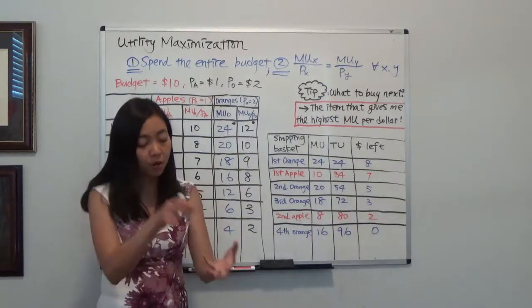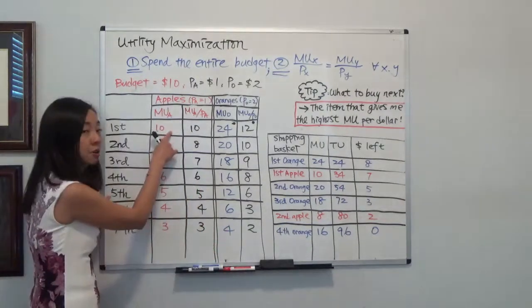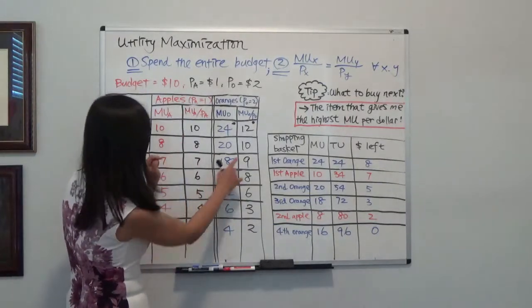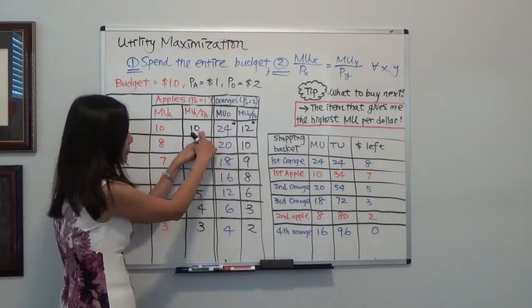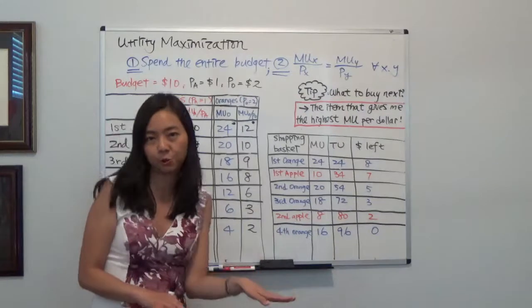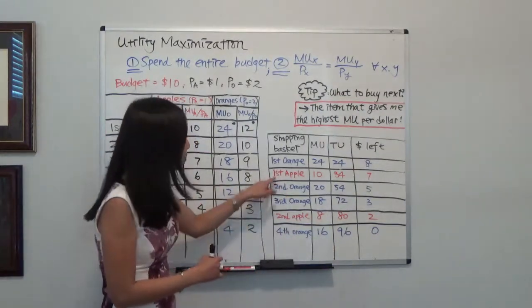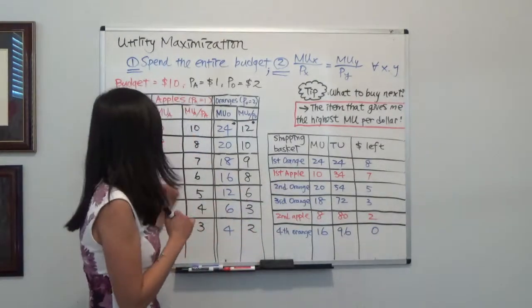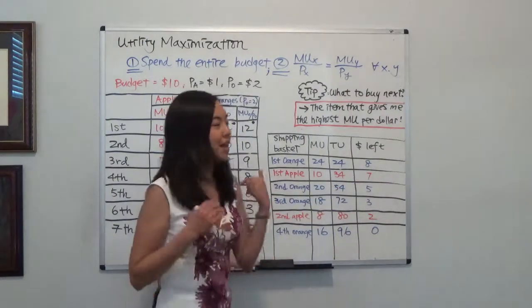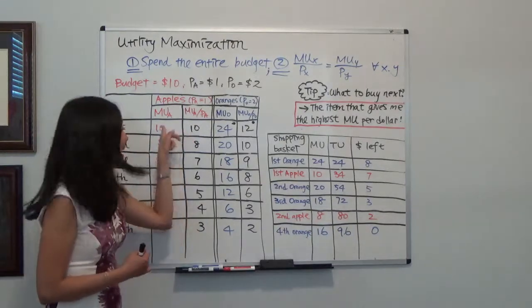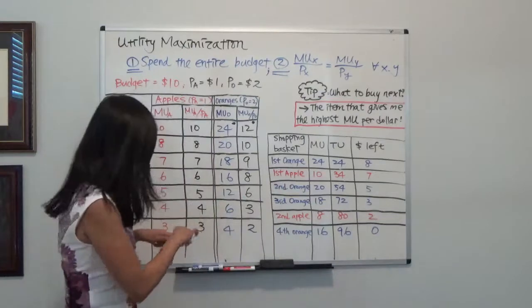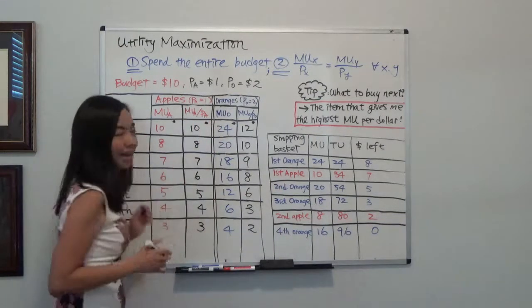What do I put next — the first apple or the second orange? The marginal utility per dollar for the first apple and the second orange are exactly the same: both are 10. So it doesn't matter which I pick first. I'll assume I put the first apple. The price of an apple is $1, so I have $7 left. The marginal utility of the first apple is 10, so my total utility is now 10 + 24 = 34.